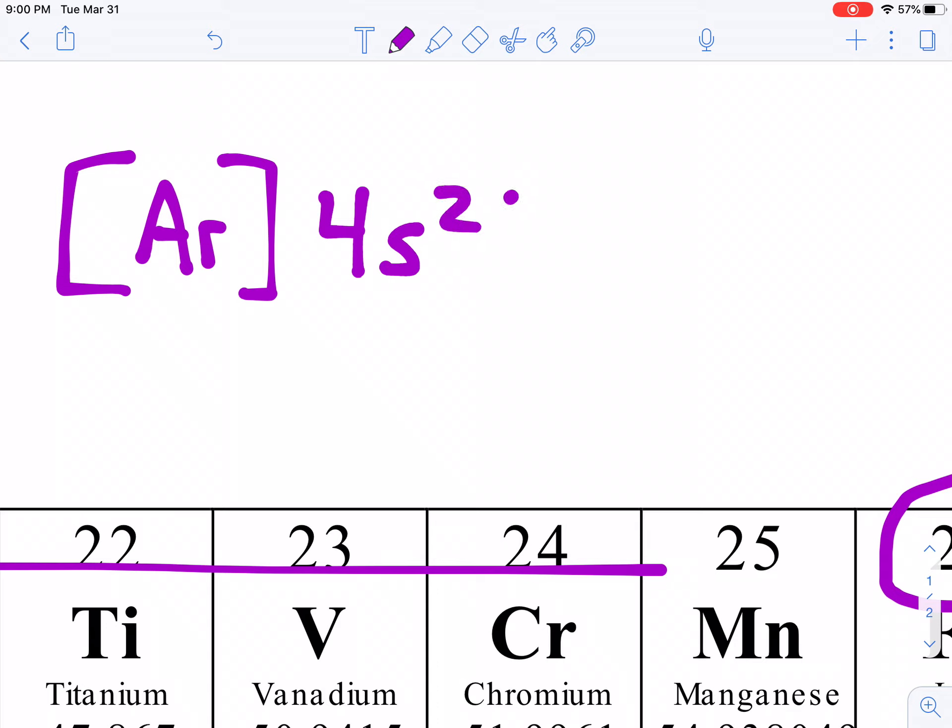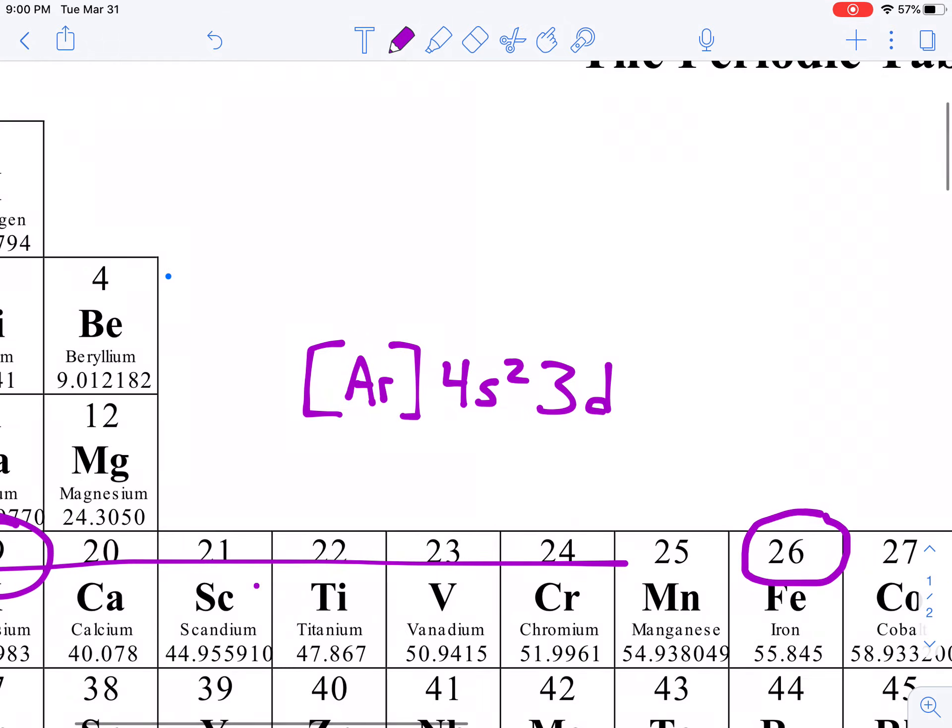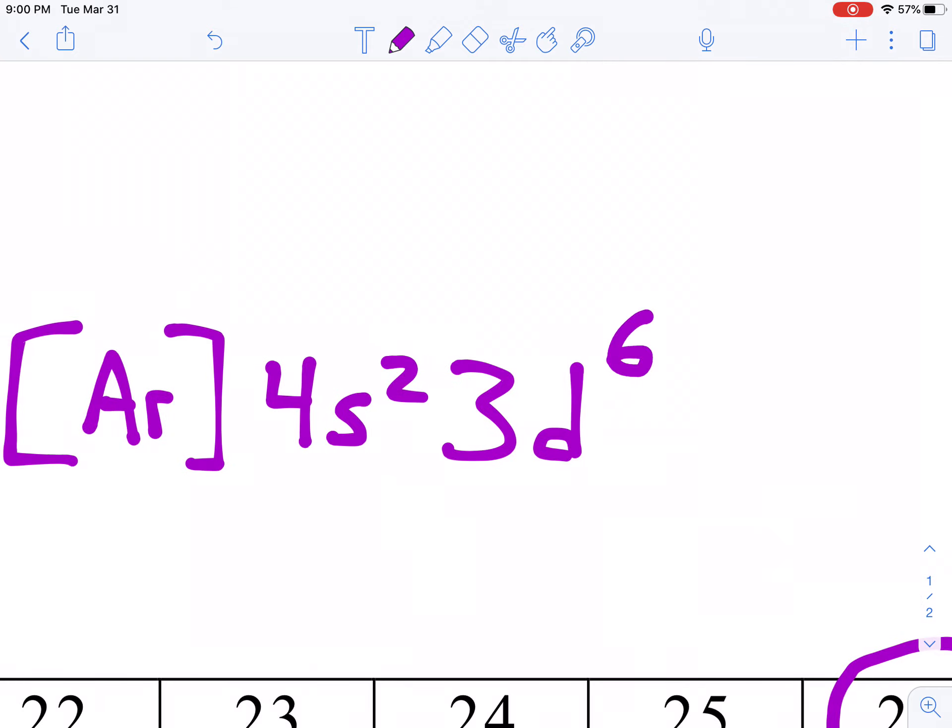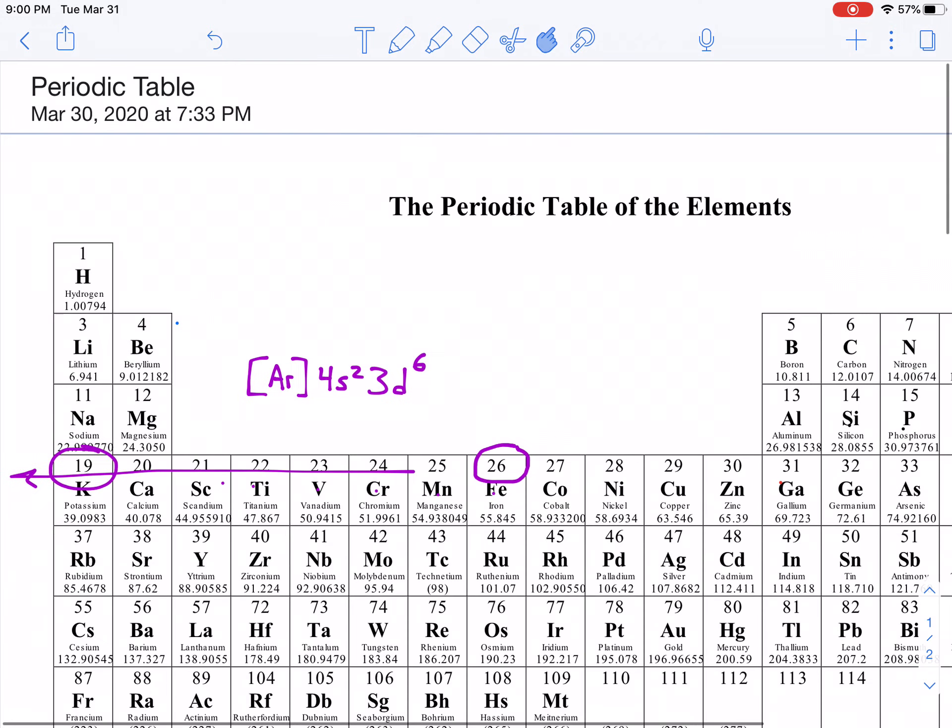What comes after 4s? Well, we go to 3d. Remember, we drop down a number to go into the d sublevel. And if you look at iron, iron is number 1, 2, 3, 4, 5, 6. It's the sixth element. So, there are 6 electrons in the d sublevel.